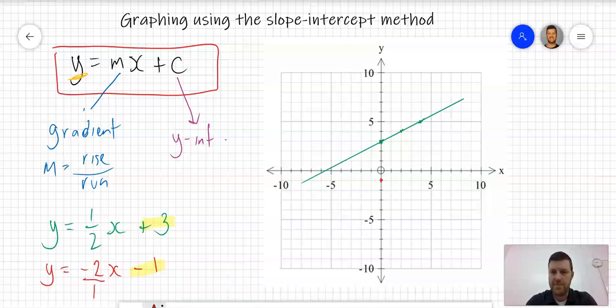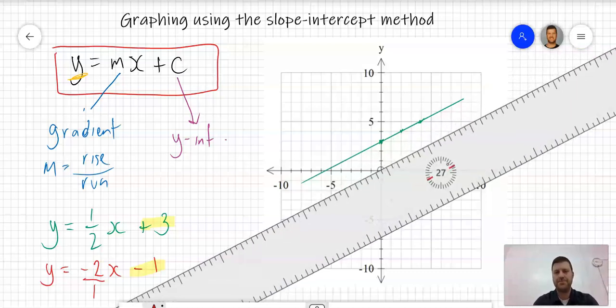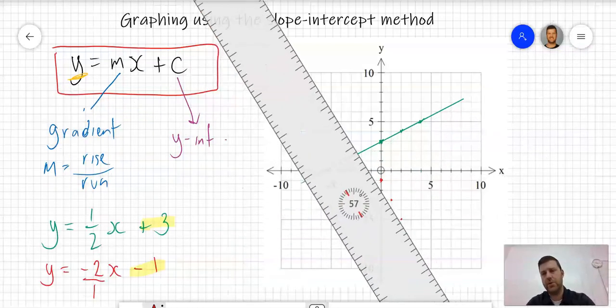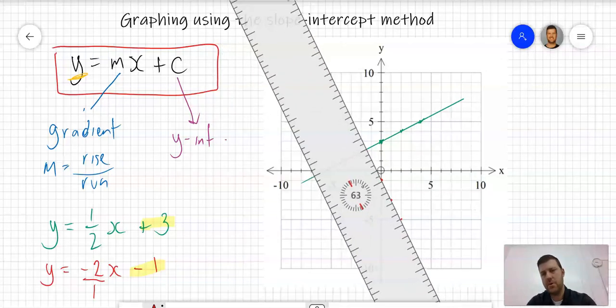So from this point on my y-axis, minus 1, I'm going down 2 and across 1. Again, I'll do another point, down 2 and across 1, and again use your ruler to draw a straight line through those points.